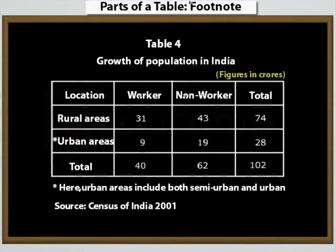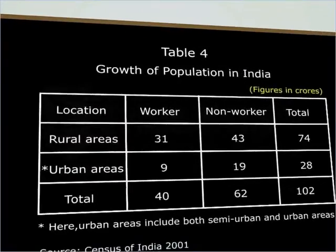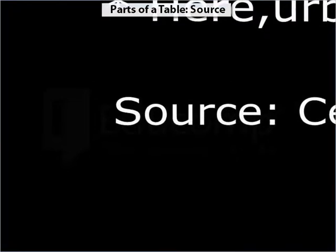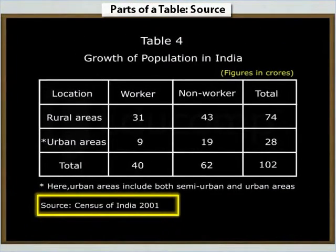If the reader is unable to understand from the title, captions or stubs, footnotes are used. Source is generally given at the bottom of a table. It is a brief statement or phrase indicating the source of data presented in the table. If more than one source is used, all of them need to be mentioned.